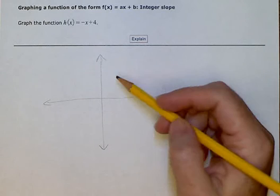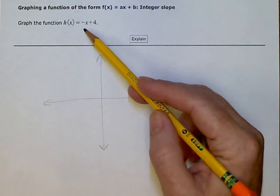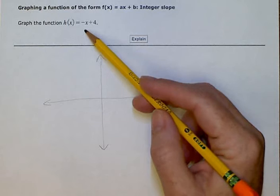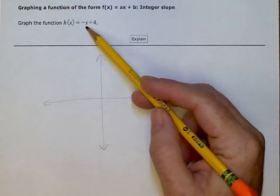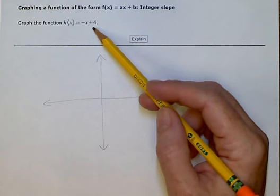So I drew a graph for us to start with. When we see a number in front of an x, that means that's the slope, and the number that's by itself is the y-intercept. We're going to start at the y-intercept.